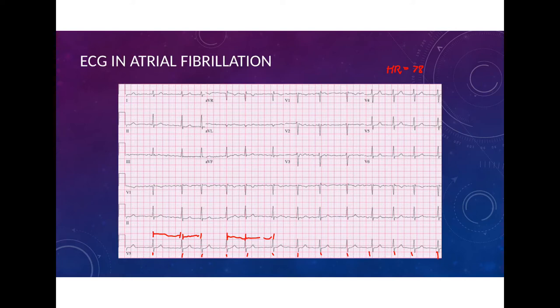There's no clear pattern to the RR intervals. If you look at the atrial activity, it's not very consistent — you see little bumps and blips across the baseline which you might mistake for P waves, but they're just not consistent enough to be called a clear P wave. Whenever you see a narrow complex, irregularly irregular rhythm without clear, distinct, and consistent P wave morphologies, you can call that atrial fibrillation.